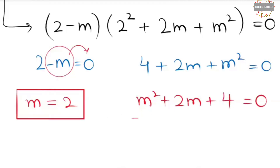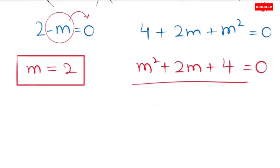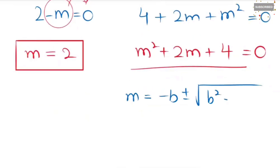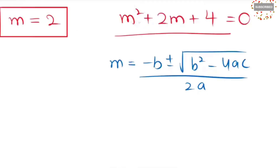This is in the form of a quadratic equation, so I am going to use the quadratic formula to find the value of m. The formula is: m equals negative b plus or minus the square root of b squared minus 4ac, all over 2a. Now I am going to plug in the values of a, b, and c.